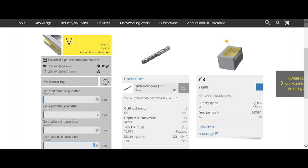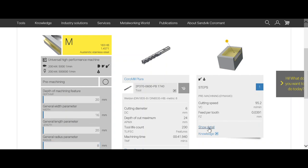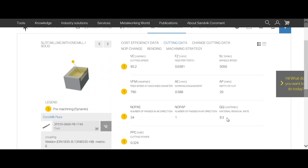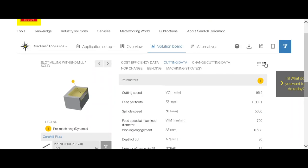We see here a quick view of the results, but we will go to show details. And we see we got 95 meters surface speed with a feed per tooth of 0.039.